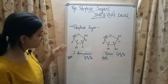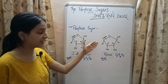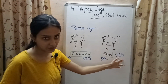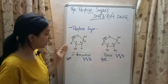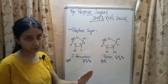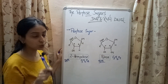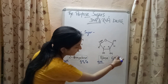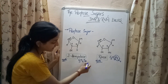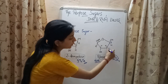The pentose sugar present in DNA is known as 2-deoxyribose, whereas the pentose sugar of RNA is ribose. Ribose has a chemical formula of C5H10O5, while the chemical formula of 2-deoxyribose, the pentose sugar inside DNA, is C5H10O4. From these two chemical formulas, you can note that there is an additional oxygen atom present in RNA, whereas the pentose sugar of DNA lacks that additional oxygen atom. This oxygen atom is present at the second carbon of the pentose ring.